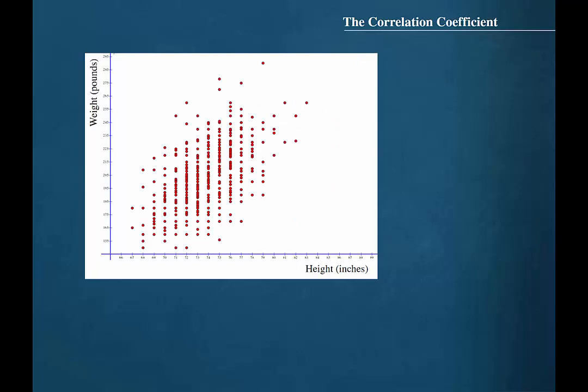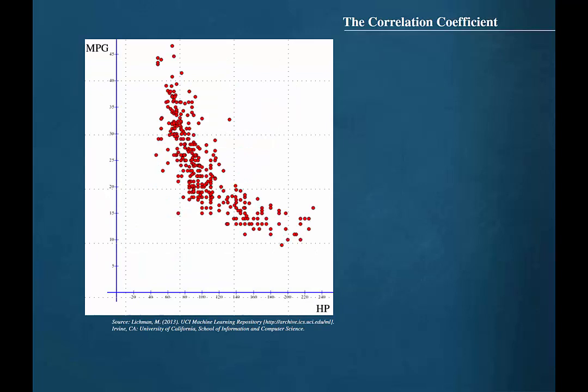This scatter plot shows the relationship between height in inches and weight in pounds for another sample of adults. It appears as though there is a positive linear relationship between these variables. The linear correlation coefficient for this data set is r equal to 0.532.